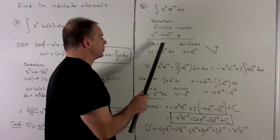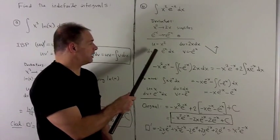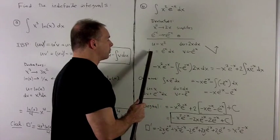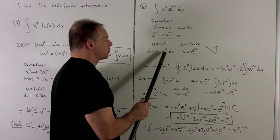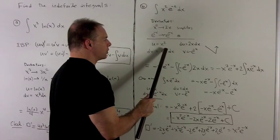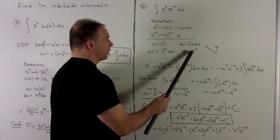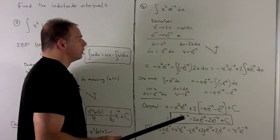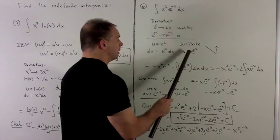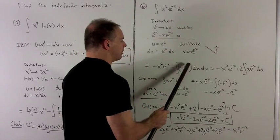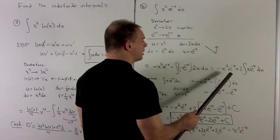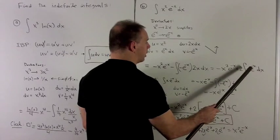So we let u equal x squared and dv equal e to the minus x dx. Then du equals 2x dx. The antiderivative of e to the minus x requires a u-substitution, which puts a minus 1 in, giving v equals minus e to the minus x. The first step of integration by parts gives u times v, which is minus x squared e to the minus x, minus the integral of v du, which is minus e to the minus x times 2x dx. Crushing the minus signs: minus x squared e to the minus x plus 2 times the integral of x e to the minus x dx.